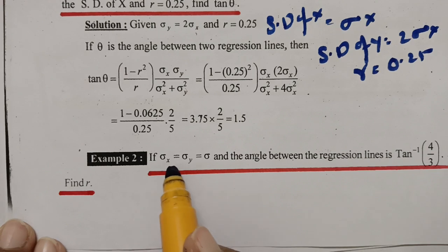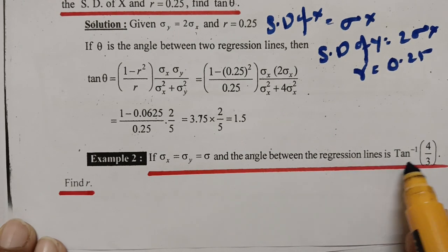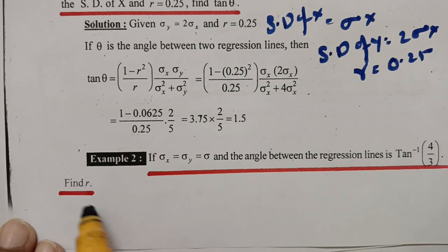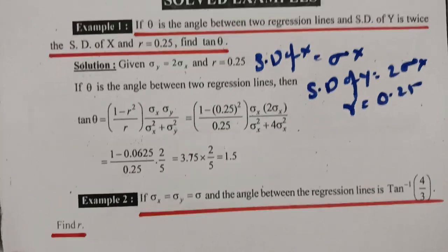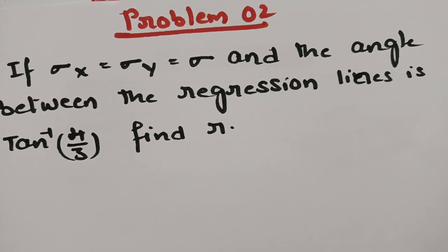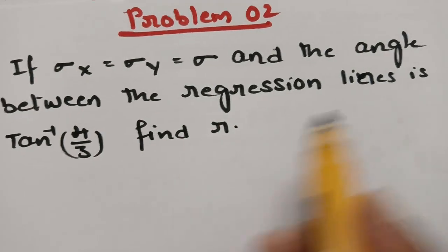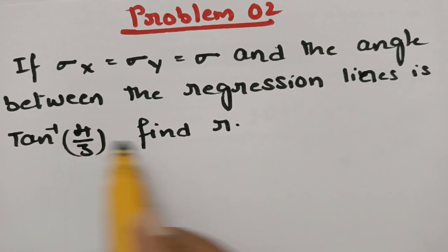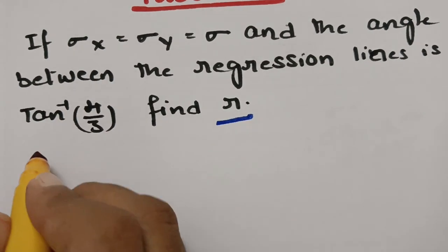Problem 2: If sigma x = sigma y = sigma and the angle between the regression lines is tan⁻¹(4/3), find r. Given: sigma x = sigma y = sigma, and theta = tan⁻¹(4/3). We have to find r.